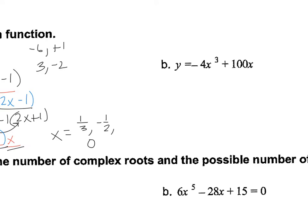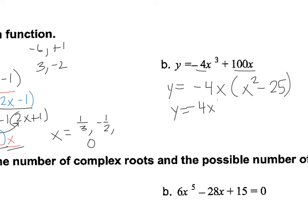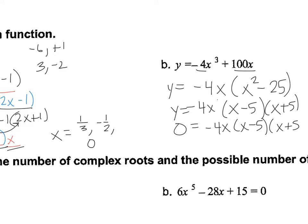I would always first try to factor. So y equals — now I'm going to factor out a negative 4, because I always want the leading coefficient to be positive inside. So I have negative 4 times x times x squared minus 25. This is a difference of squares, so I have x minus 5 times x plus 5. Using the zero product property, I get x equals 0, x equals 5, and x equals negative 5.